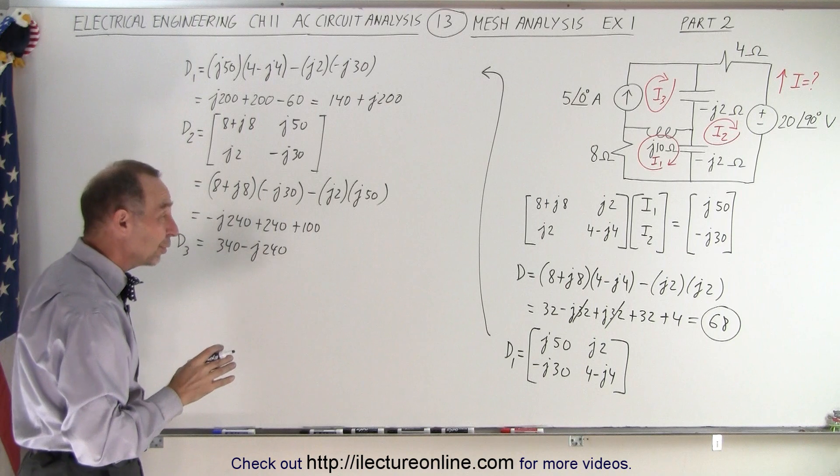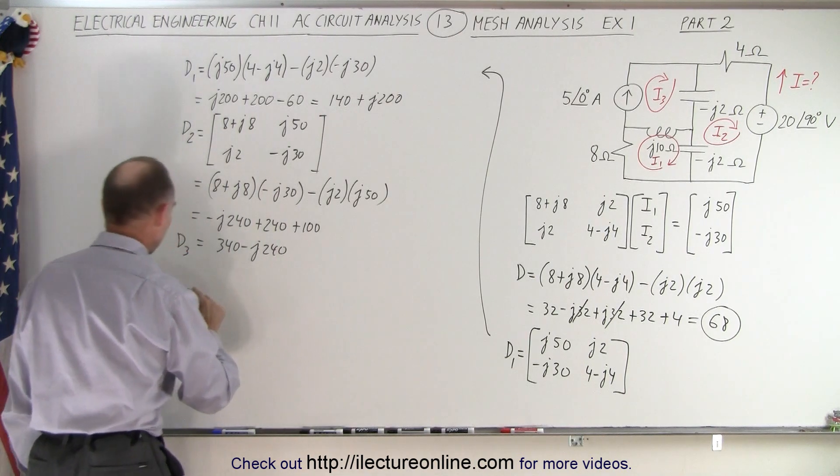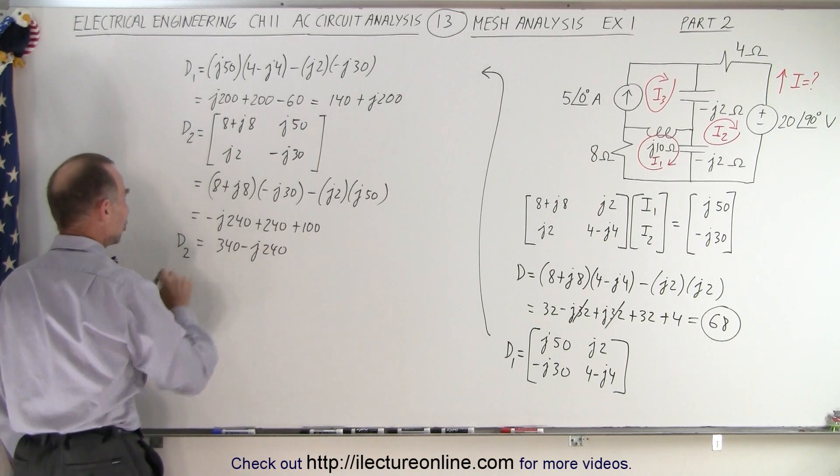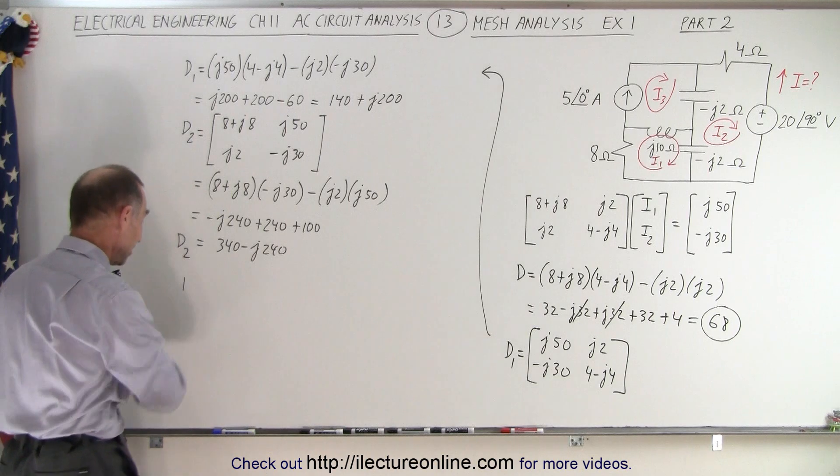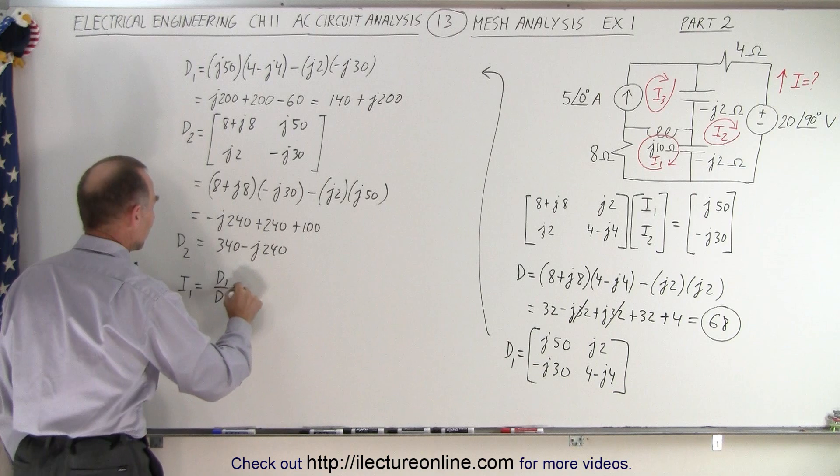So now since we're going to have to solve these equations right here, I think we can go ahead and do that. So then we know that I keep saying d3, but I really mean d2. So don't mind that, that's the d2. So i1 is equal to d1 divided by the determinant d, which is equal to d1.